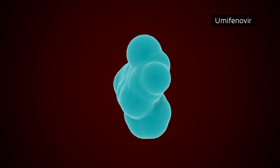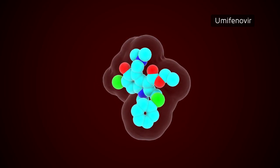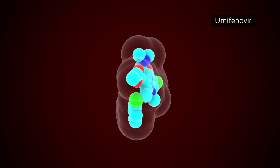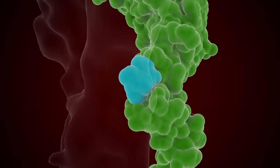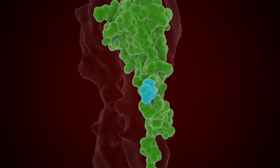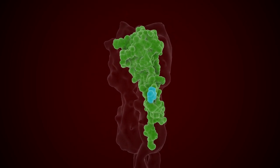Umifenovir is an antiviral molecule that blocks the fusion mechanism. It carries an indole core and can bind strongly to hemagglutinin, impeding its flexibility.